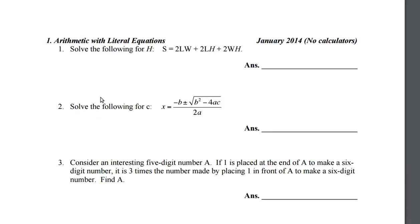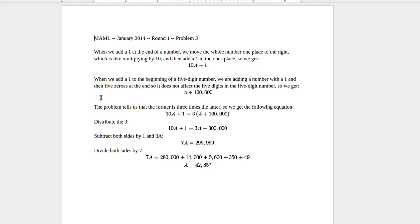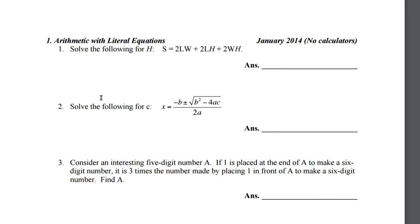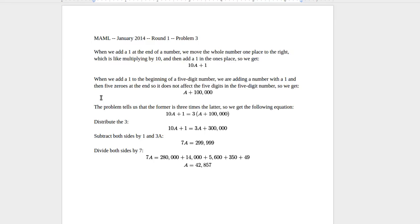From this word problem, we need to make an equation. We need to basically follow the directions that they tell us in this problem. First, we need to make a number such that 1 is placed at the end of A. When we place a 1 at the end of the number, that's like moving the whole number 1 place to the right, which is like multiplying by 10, and then you add a 1 in the 1's place. So you get 10A plus 1. So 10A plus 1 is the number you get when you add 1 to the end of A.